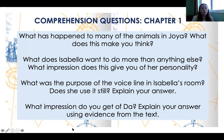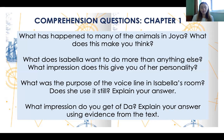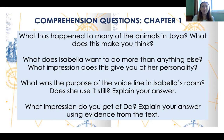Chapter one questions: What has happened to many of the animals in Joya, and what does this make you think? What does Isabella want to do more than anything else, and what impression does this give you of her personality? What was the purpose of the voice line in Isabella's room — does she still use it? What impression do you get of Dar? I don't want one-word answers — I want you to make connections, think about what you already know, and think deeply about the story.